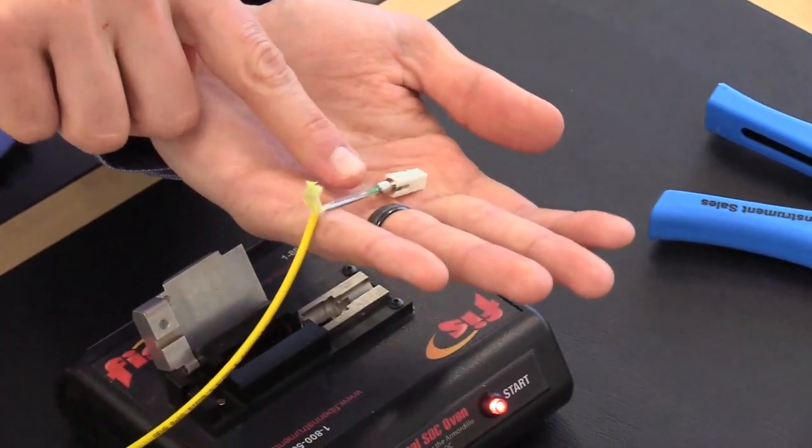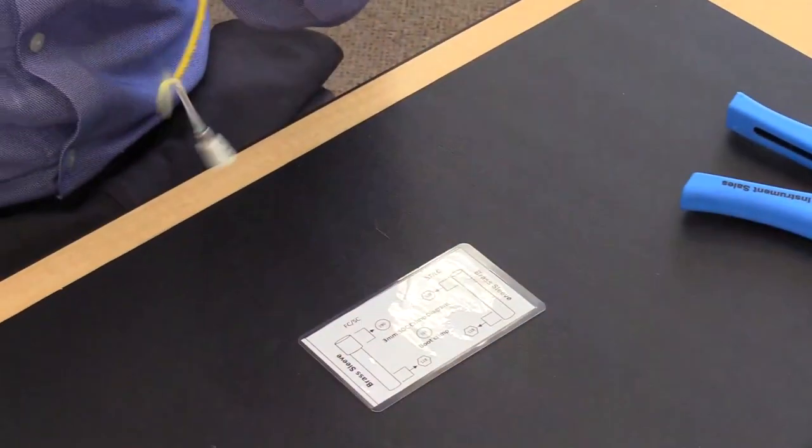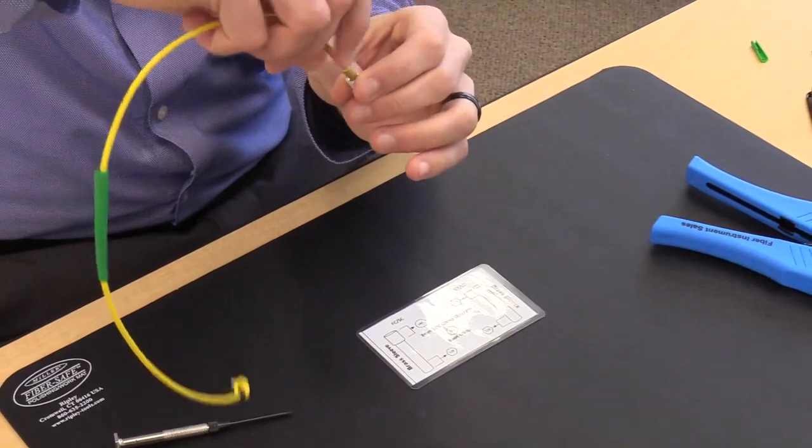Make sure you have an even melt along the splice sleeve prior to sliding the boot up. Once the sleeve is melted, pull down the Kevlar followed by the extended brass crimp ring.